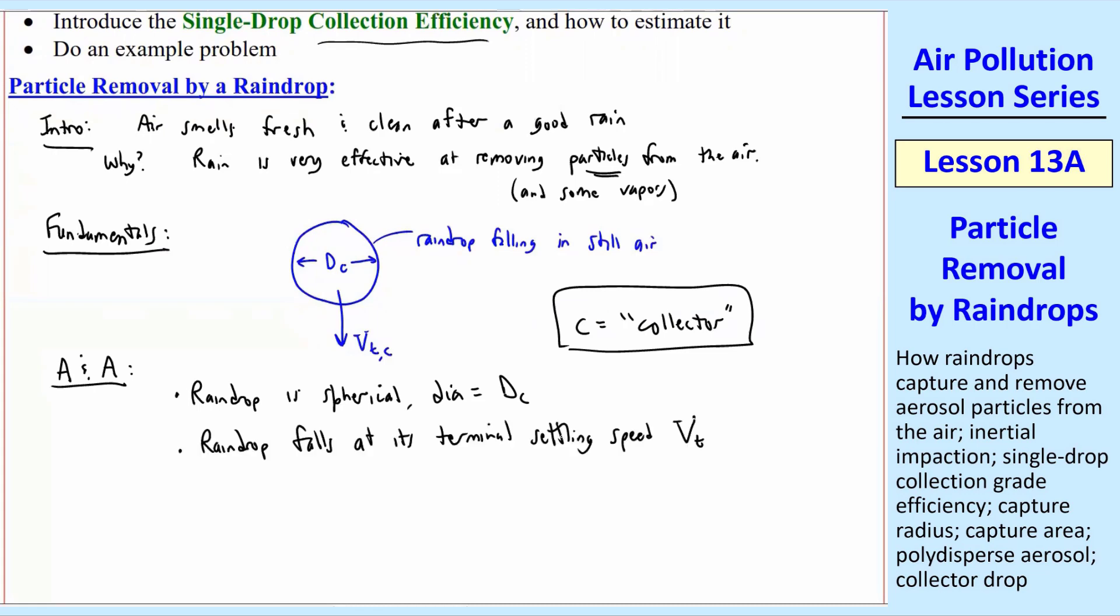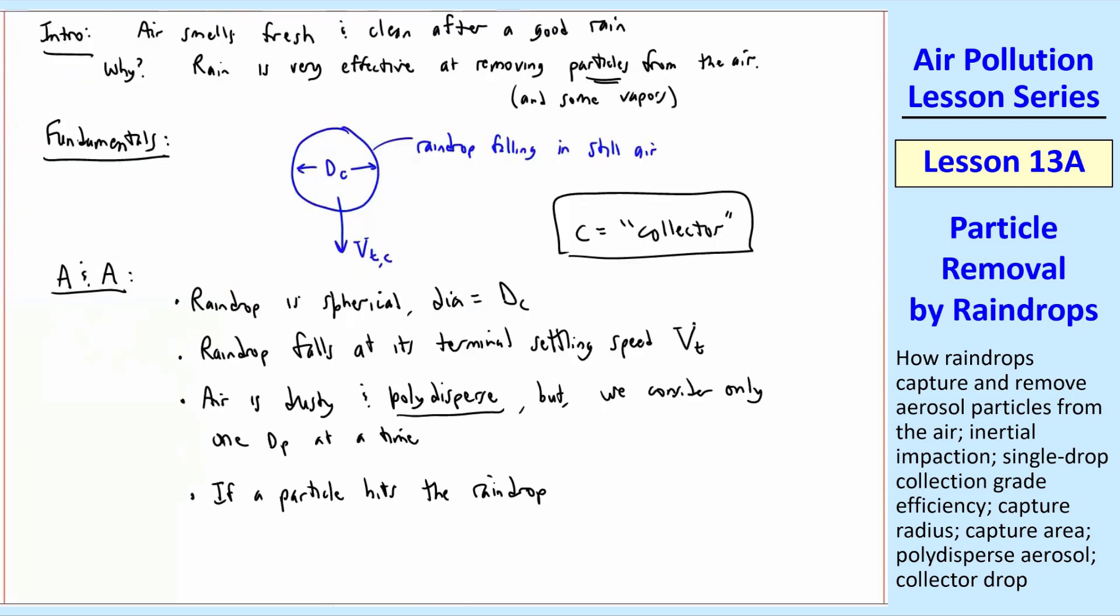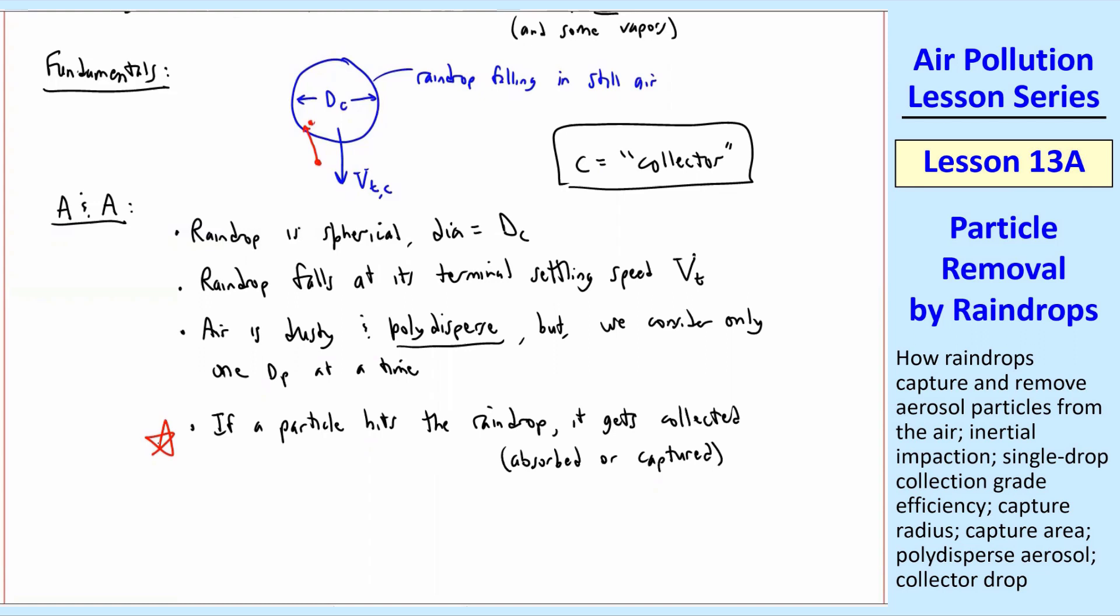This raindrop falls at its terminal settling speed VT, which you know how to calculate. You'll have to iterate, as we're used to doing. The air is dusty and polydisperse, but as usual, we consider only one particle diameter at a time. I should say we're also considering only one raindrop at a time, at least for now. The next assumption is that if a particle hits the raindrop, it gets collected. You can also say it's absorbed or captured. So if a particle happens to hit that raindrop, we'll assume that it gets inside the raindrop. Finally, DC is greater than DP. Typically we're talking about very big raindrops compared to air pollution particles.